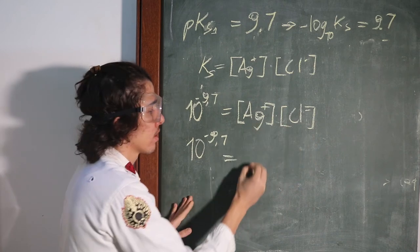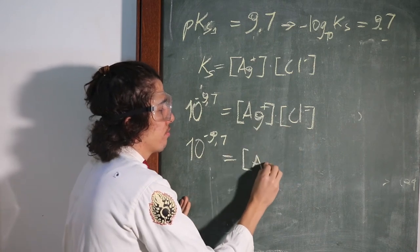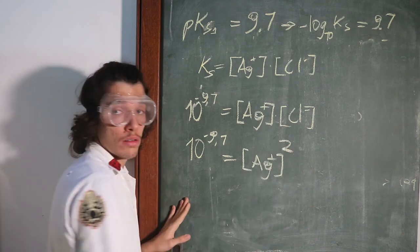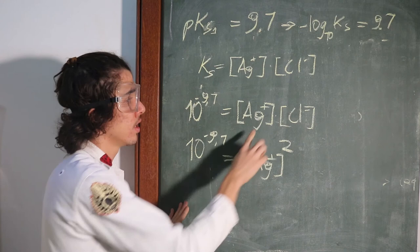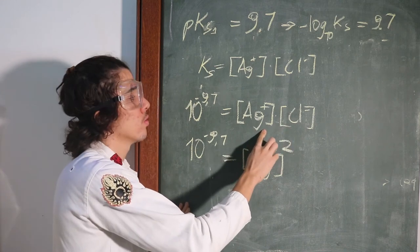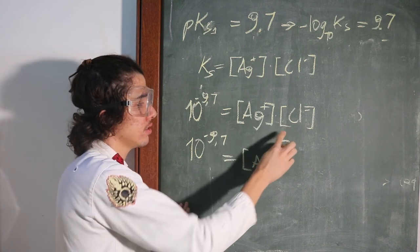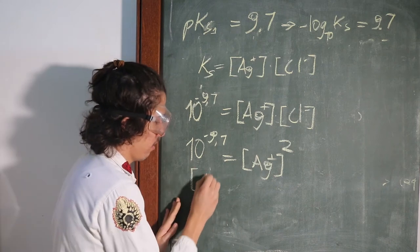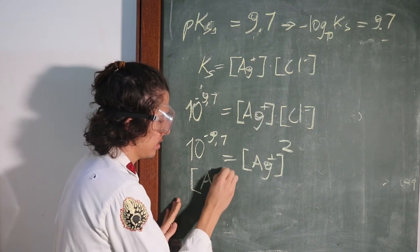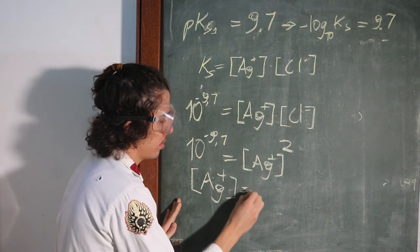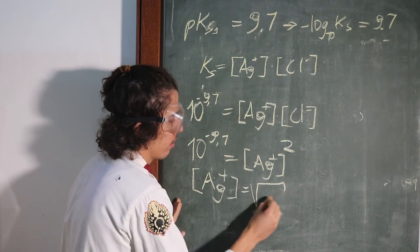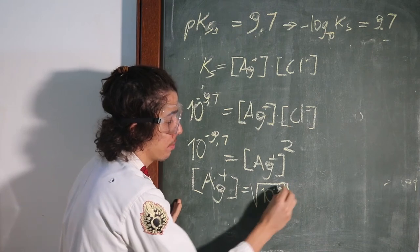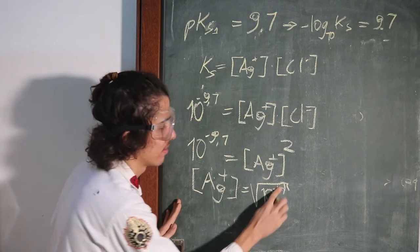So it's going to be Ag times Ag. Then concentration of Ag+ is going to be squared. Okay? Because this is equal to this, so it's going to be Ag times Ag, then Ag squared. And the concentration of Ag in the end, finally, is going to be square root of 10 times minus 9.7 in the power of minus 9.7.